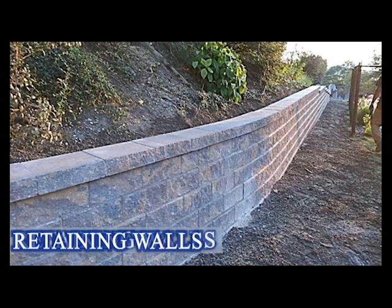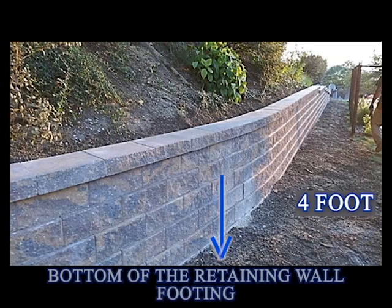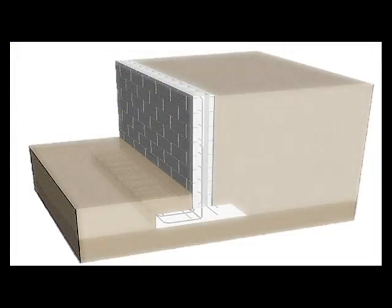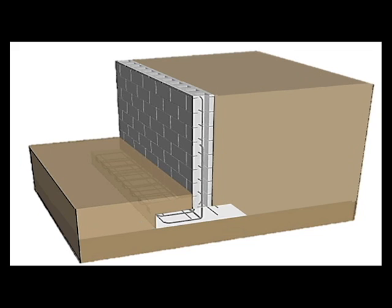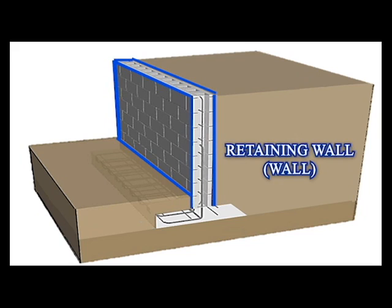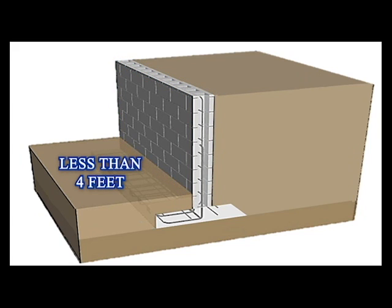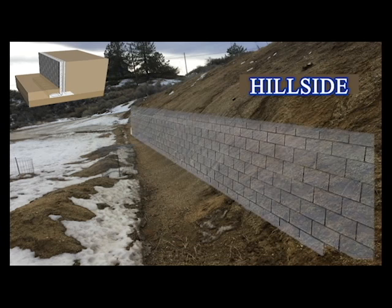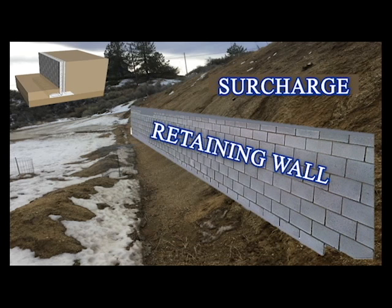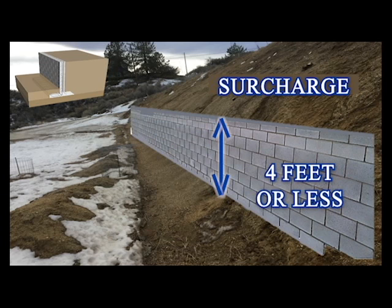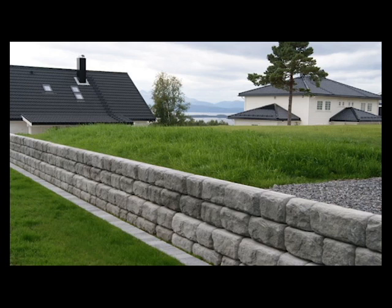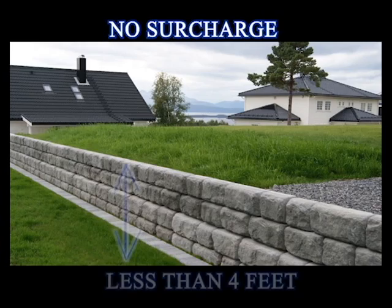Retaining walls are exempt from building permits, provided they are less than 4 feet high, measured from the bottom of the retaining wall footing to the top of the wall, with no surcharge. Here you see an isometric drawing depicting the retaining wall footing and wall. For this wall to be exempt, it must be no more than 4 feet from the bottom of the footing to the top of the wall. Constructing a retaining wall to support a surcharge — even if it is less than 4 feet — will require a permit. An example of an exempt retaining wall would have no surcharge and appear less than 4 feet high.